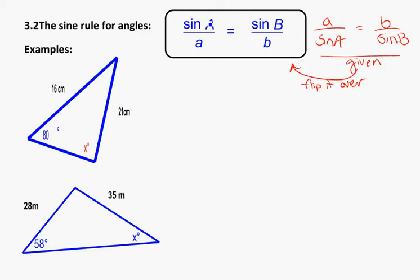So to find the unknown angle big A, what we actually need to do is sine of big A is going to be equal to sine of B over little b times a, we'll times that little a to the other side. And as a final step, big A will be equal to sine inverse of all of that stuff. So sine of big B over little b times little a.